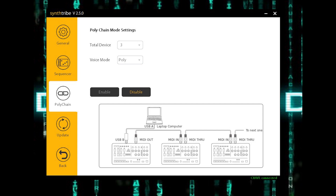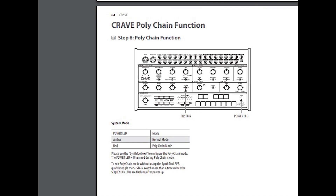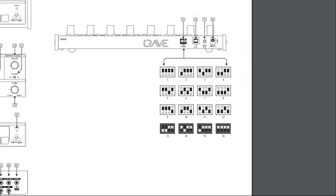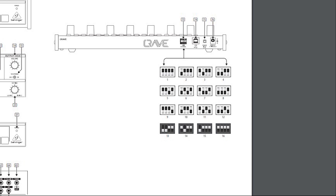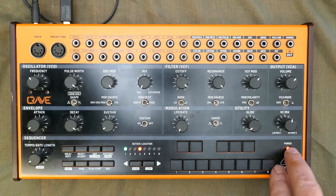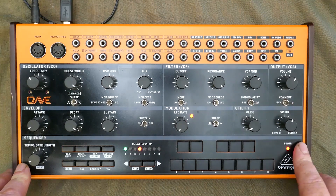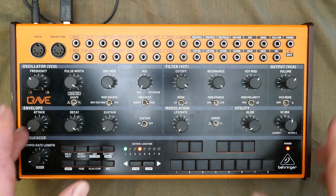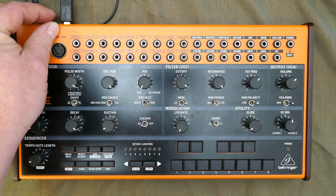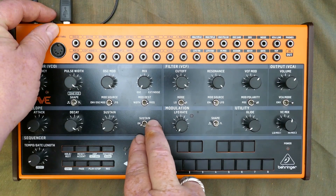Now I'm using three Craves, so I'm going to set these to three and then click on Enable. We can also enter the Polychain function — we can toggle it on and off by using the sustain switch on the front, toggling that on and off four times while the power-up lights are still flashing. Also bear in mind that the units have to be set to the same MIDI channel. Here we can see the dip switches on the back of the Crave — for this I'm going to be setting them all to channel one. The red power LED is red rather than orange to indicate that we are in fact in Polychain mode.